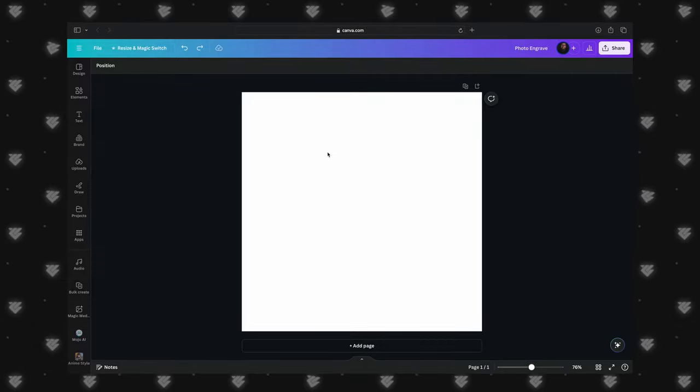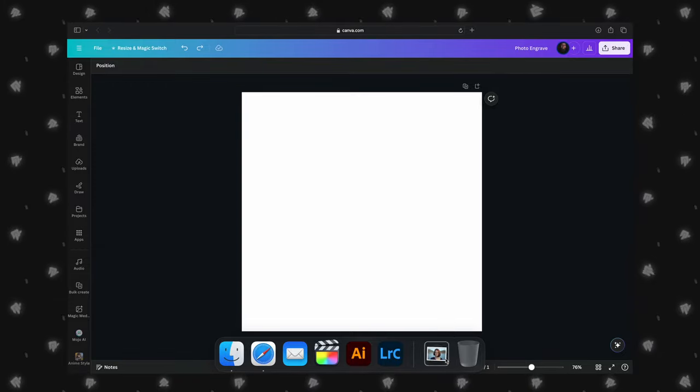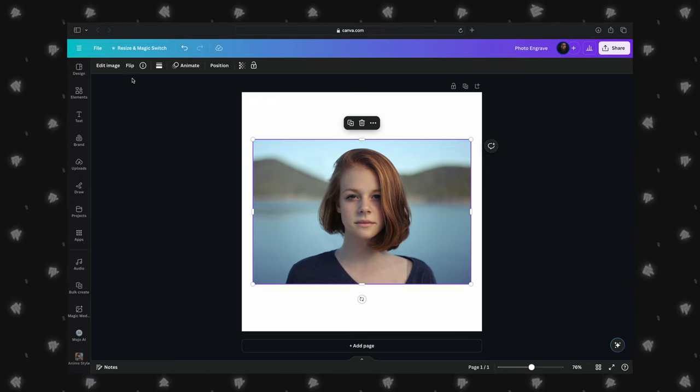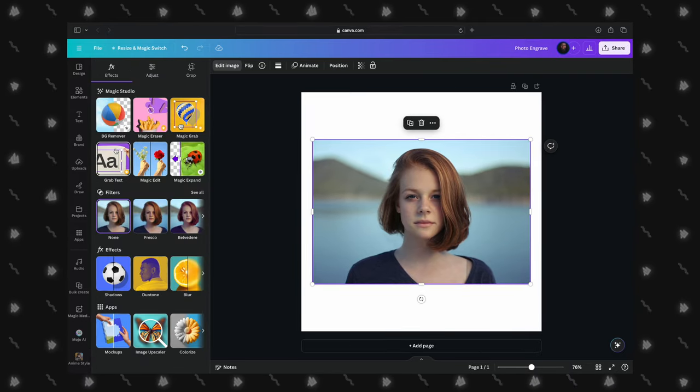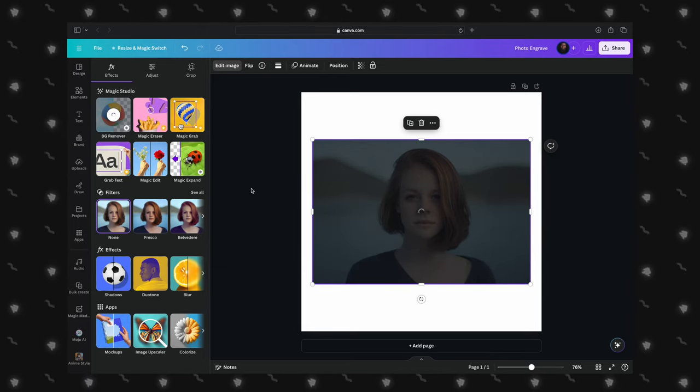We will begin in Canva. This step is optional, but for our image we would like to remove the background and find that Canva does a really nice job with this. We will get our image imported and resized to fill our canvas. Now we can click on the image, select Edit Image, and then BG Remover. And after a few seconds we have a perfect image for engraving.